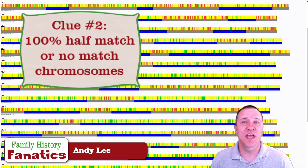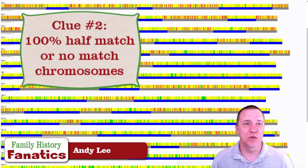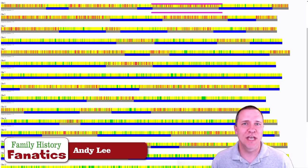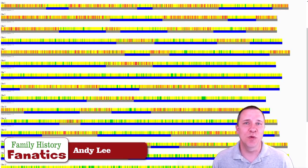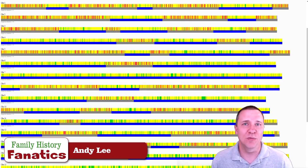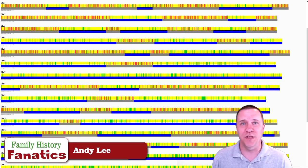The last thing to look for is 100% unmatched or 100% half-matched chromosomes. Here, chromosome number seven is a 100% half-match chromosome — and what makes this significant is that chromosome seven is one of the lower numbers, meaning it's one of the longer chromosomes. Whereas in aunt-uncle relationships we would not expect unmatched or half-matched chromosomes on long chromosomes, with half-siblings we would expect those to possibly occur — making this another indicator of a half-sibling rather than another 25% relationship.